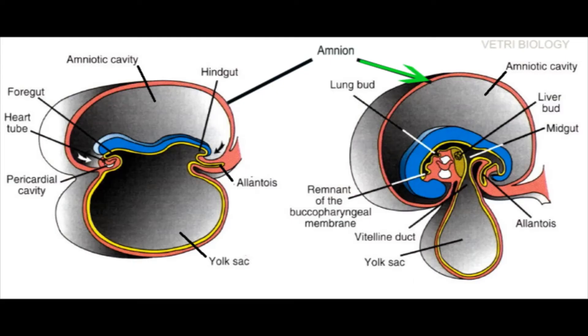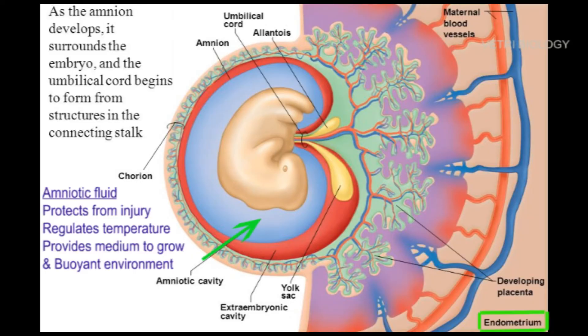The amnion is a double-layered translucent — that is, semi-transparent — membrane filled with amniotic fluid. This amniotic fluid protects the embryo from injury, regulates the temperature of the fetus, and provides a medium for the fetus to grow. The amniotic fluid provides a moist aquatic environment for the embryo.